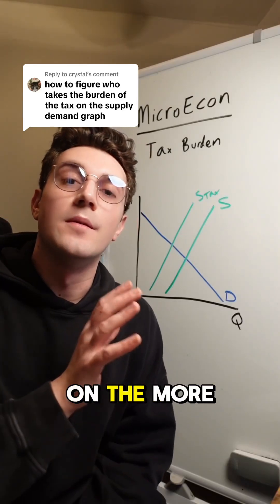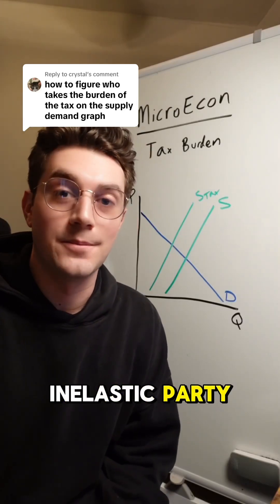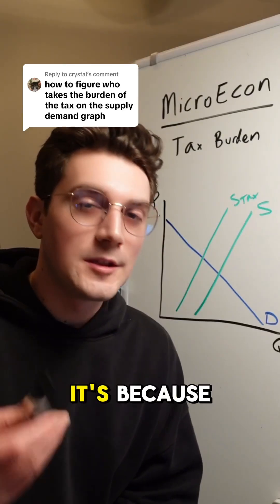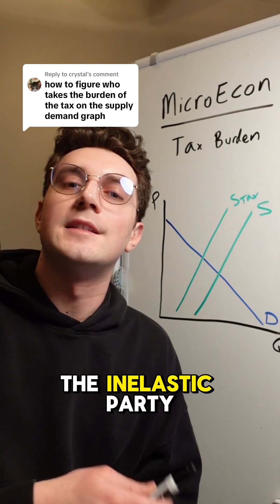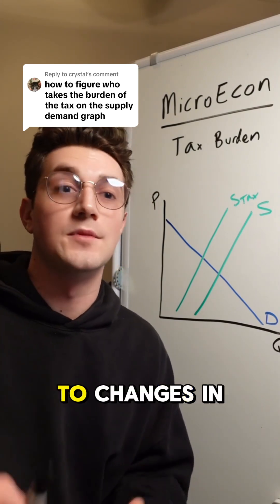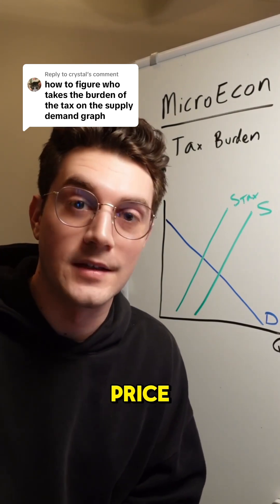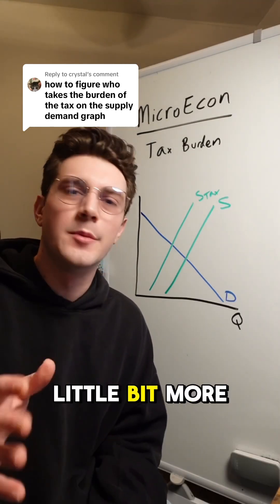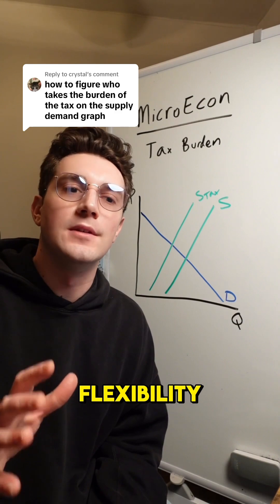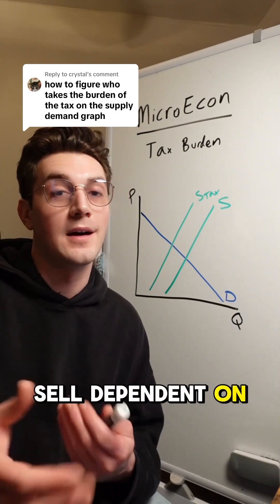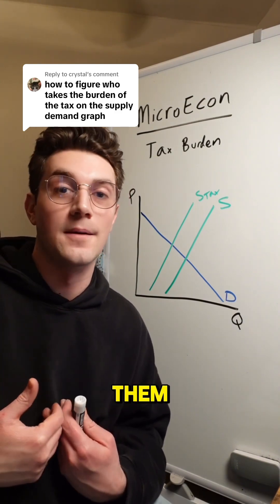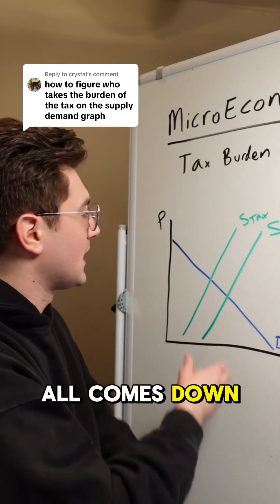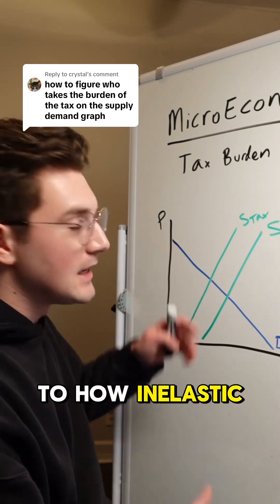The tax burden falls on the more inelastic party. Conceptually, it's because the inelastic party is a little bit more helpless when it comes to changes in price, whereas the more elastic party has a little bit more flexibility to buy or sell dependent on what's best for them.